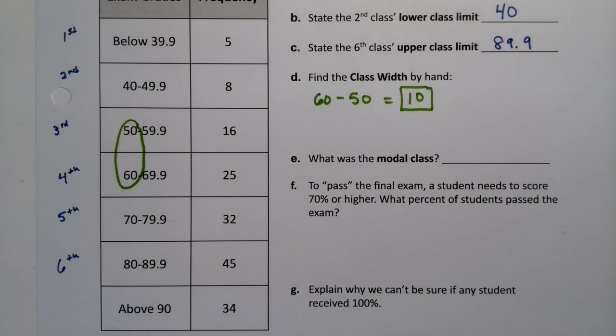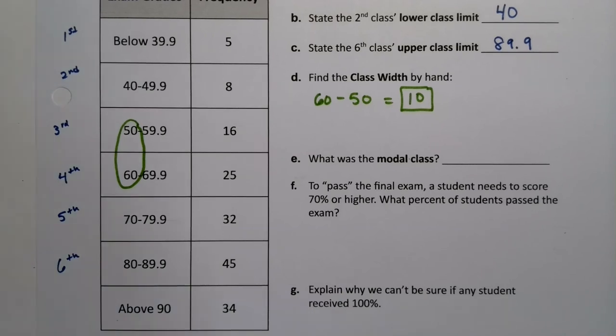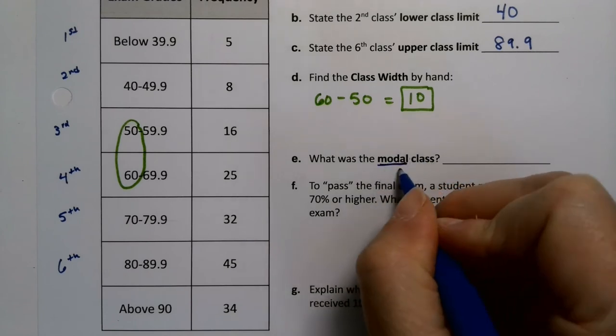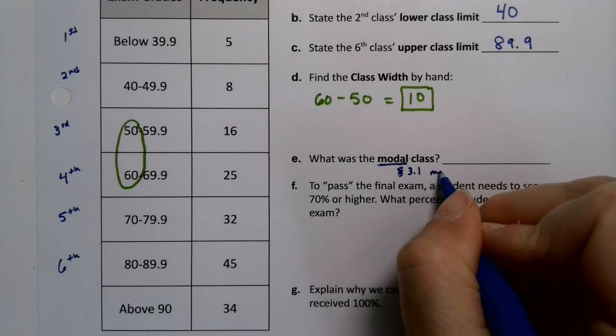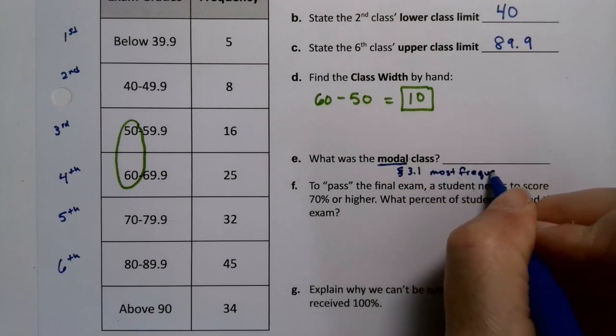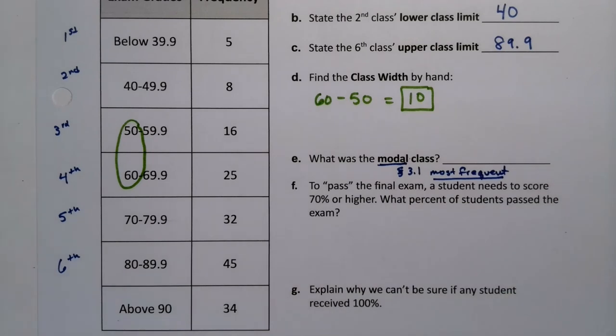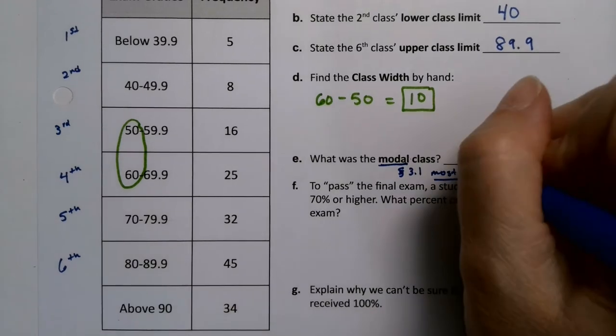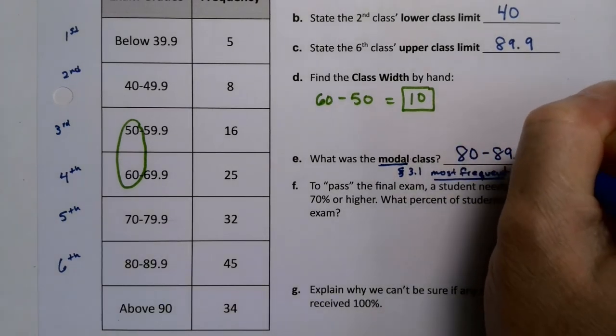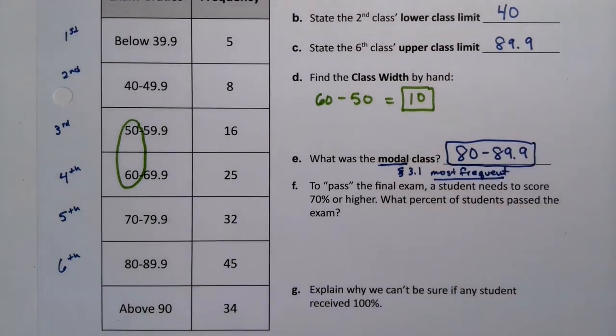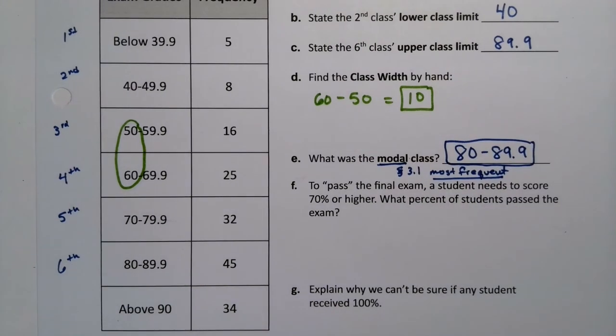What was the modal class? Now the modal mode, you've seen that word before. It's really going to be talked about in section 3.1, but it means the most frequent. Which class has the most frequent values, which in this case is 80 to 89.9. Because it has the highest frequency. Now it's not the frequency that you write. It's not 45. 45 is why it's happening, but the class itself is 80 to 89.9. So that's the answer. That is the most frequent class, the modal class, also known as the mode.